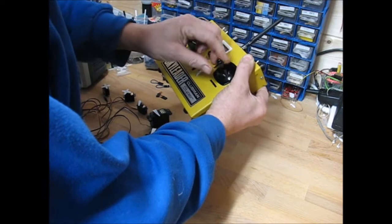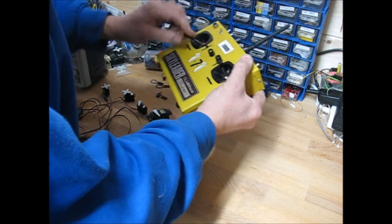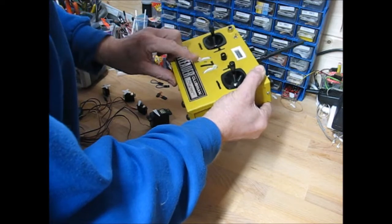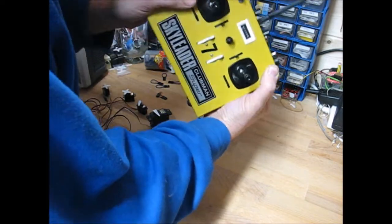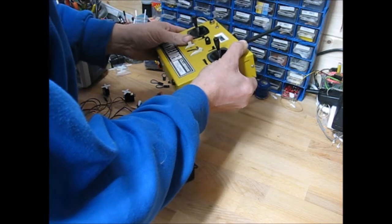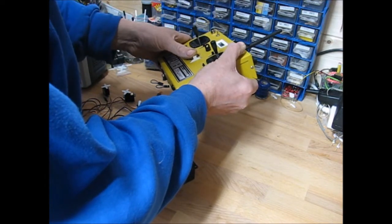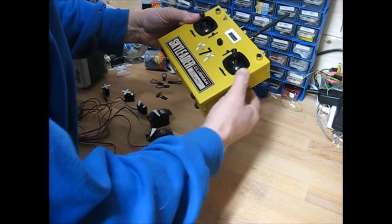Move all the sticks to their extremes, including the auxiliaries. And then crucially we centre everything, including the throttle and the auxiliary pots. So everything is centred. Then we let go.